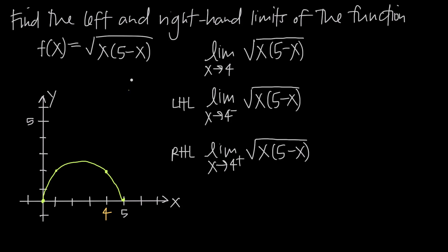If we plug in a negative value like x = −1, we get √(−1 · 6) = √(−6), which requires imaginary numbers. So x = −1 is not in the domain, which is why the graph stops at x = 0. Similarly, at x = 6: we get 5 − 6 = −1, so 6 · (−1) = −6, and again √(−6) is undefined. So the function only exists on the interval x = 0 to x = 5.